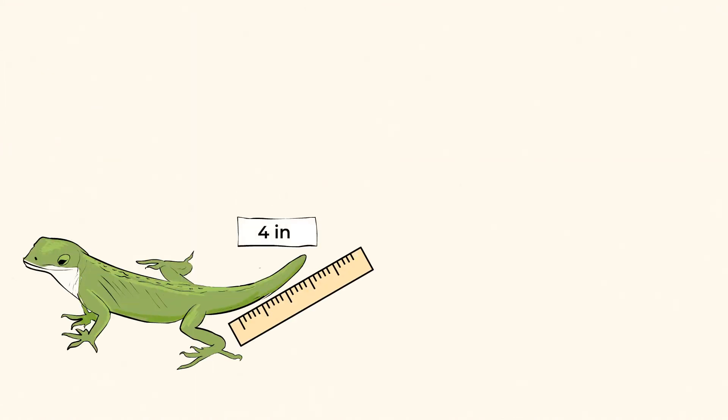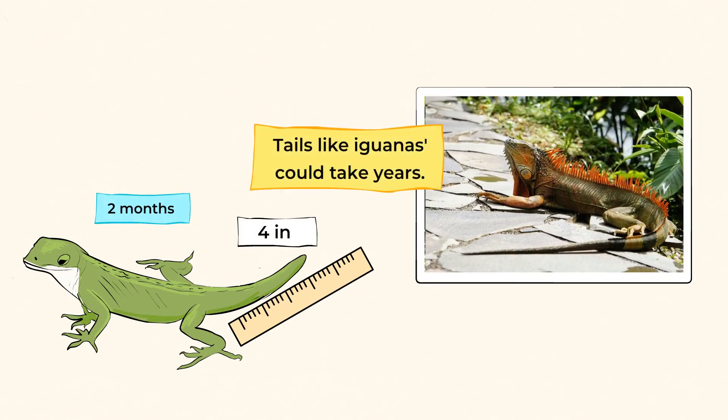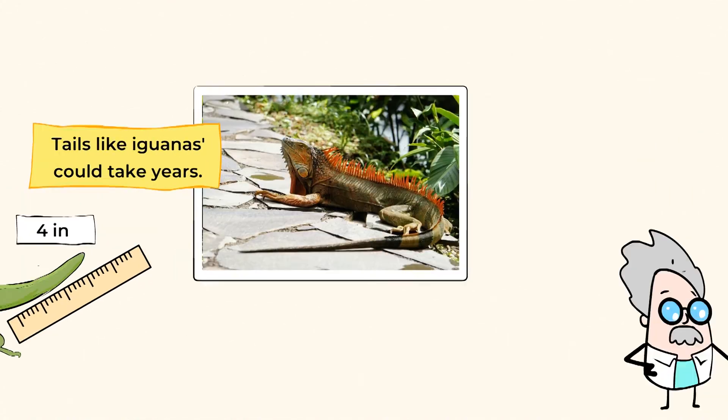A small tail, maybe only four inches long, could take up to two months to grow back. And longer tails, like on the iguana, could take years to fully grow back. And most lizards can regrow tails multiple times throughout the course of their life before they can't regrow tails anymore.